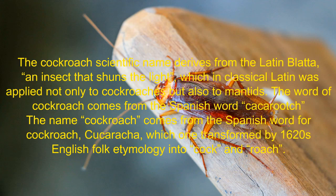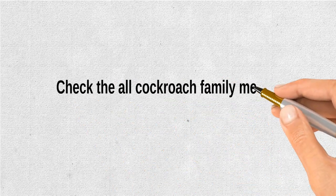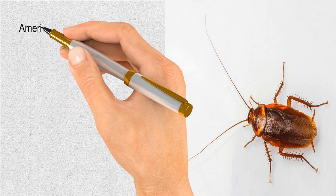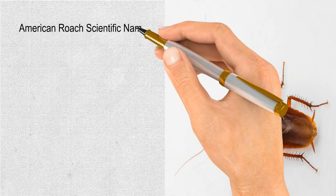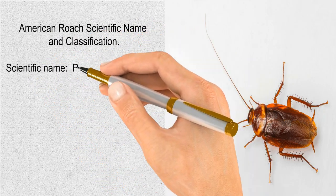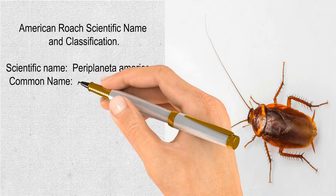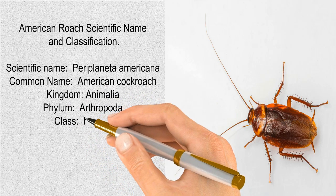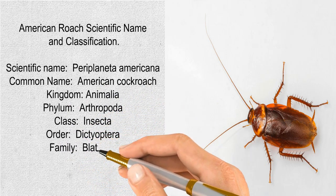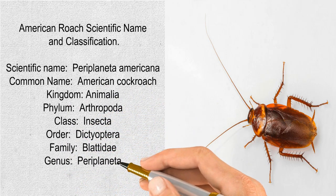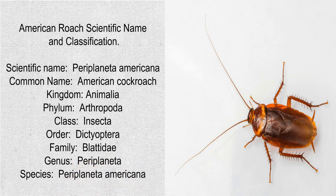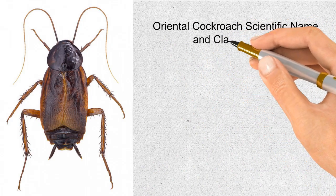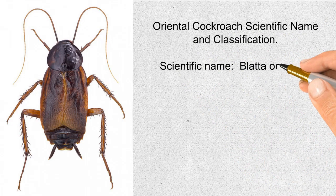The name cockroach was transformed by 1620s English folk etymology into 'cock' and 'roach'. American cockroach: scientific name Periplaneta americana, common name American cockroach, kingdom Animalia, phylum Arthropoda, class Insecta, order Dictyoptera, family Blattidae, genus Periplaneta, species Periplaneta americana.